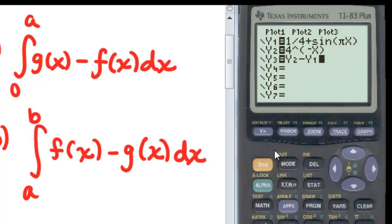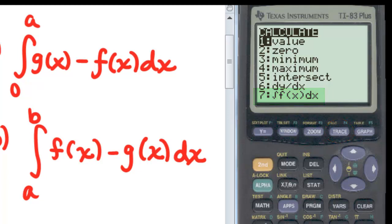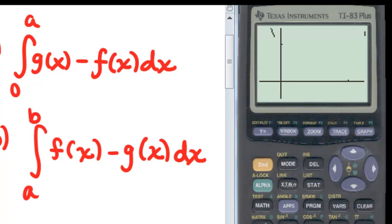As you can see, I've done the difference of the two functions. I'm going to turn off the plots of Y1 and Y2 by going over on top of the equal sign and hitting enter to unselect it. Then I'm going to go second and trace and 7 for integral.